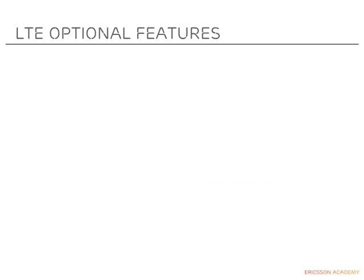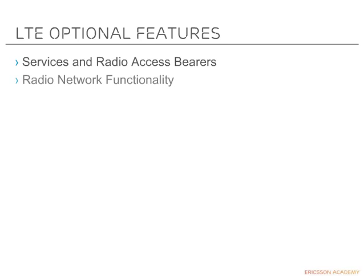In addition to the BASIC package, a number of optional features are also offered. Six main groups have been defined in the first LTE release. The groups are: services and radio access bearers — an example being multiple data radio bearer service; and radio network functionality — examples include dual antenna, downlink performance package, 64QAM downlink, 16QAM uplink, and a number of more features.